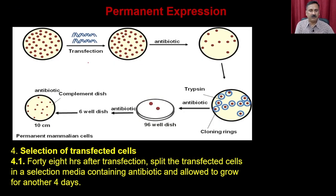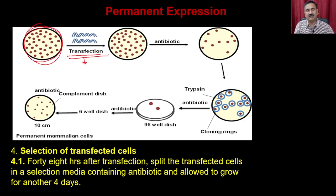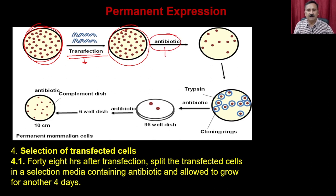So, first you are going to do the plating of the cells, then you perform transfection with a suitable transfection reagent. Once you have the transfection, you do the antibiotic screening — you can use puromycin, valinomycin, or various other antibiotics — and then you do the selection of the transfected cells.